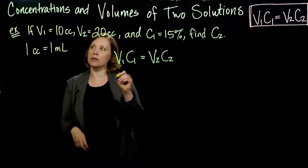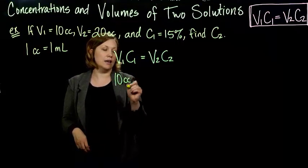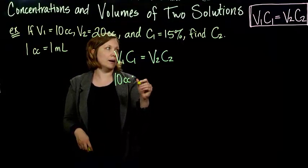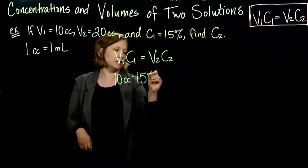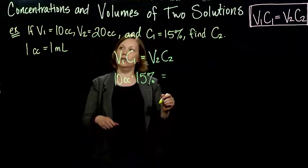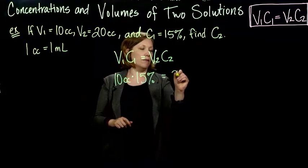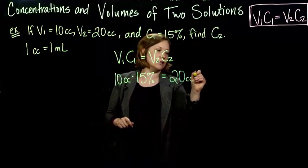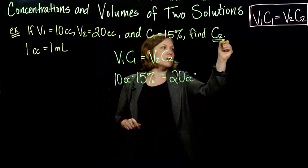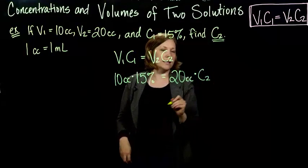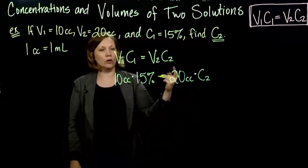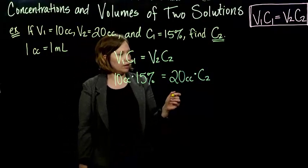So we take 10 cc's and multiply that by 15% should equal, well they gave us the volume, 20 cc's, and we multiply by, we don't know C2, so we're just going to write C2. You could use another variable if you want, but this should work.